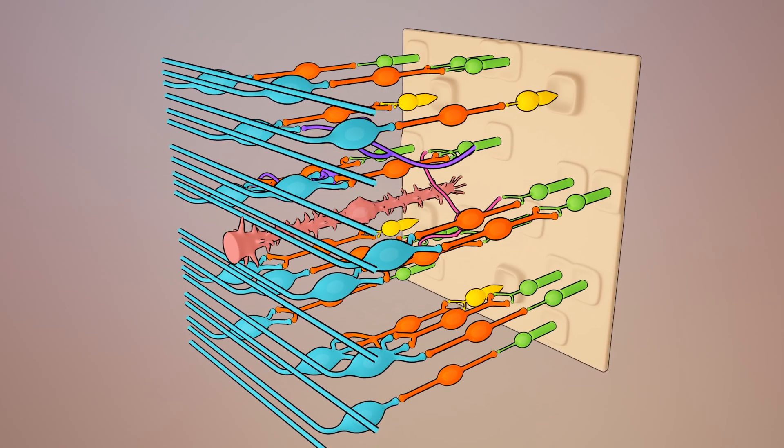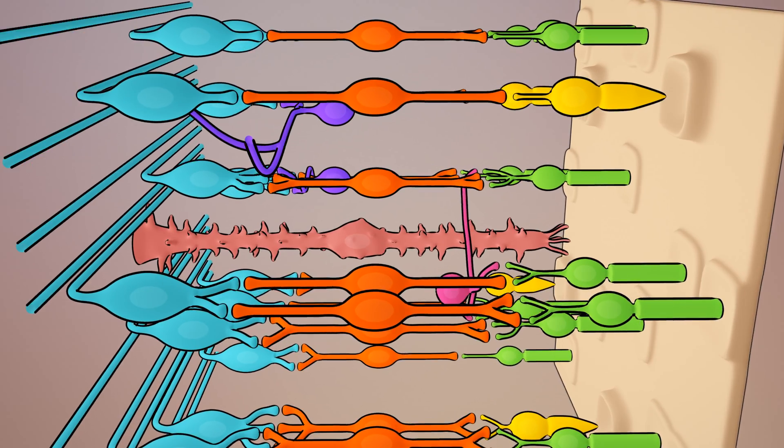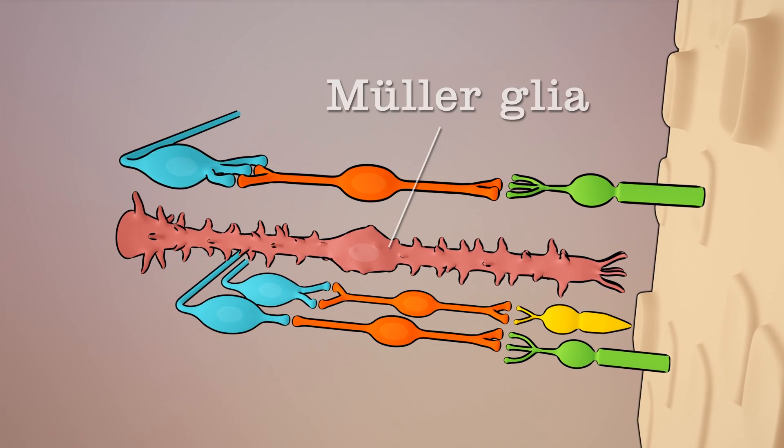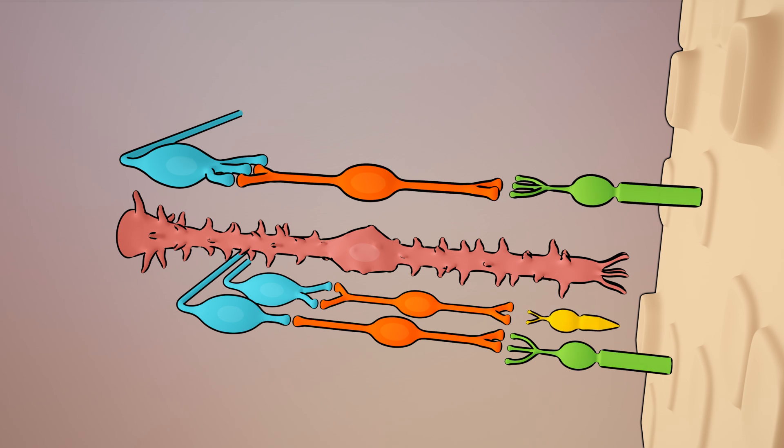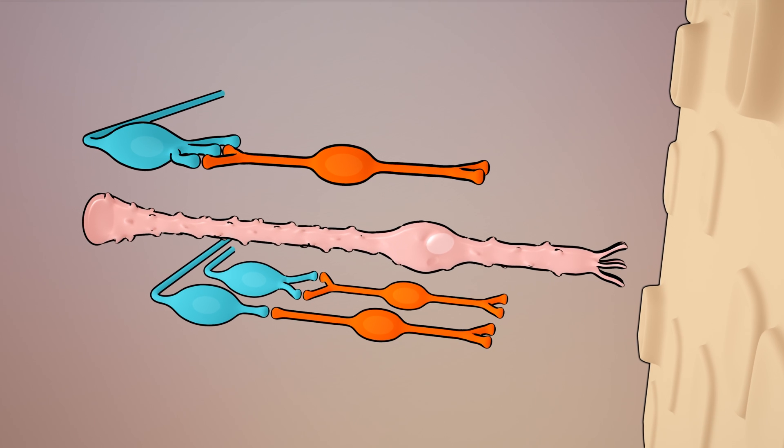So what's behind the zebrafish's superpower? The main players are sets of long cells that stretch across the retina, called Muller glia. When the photoreceptors are damaged, these cells transform, taking on a new character. They become less like Muller cells and more like stem cells, which can turn into any kind of cell.